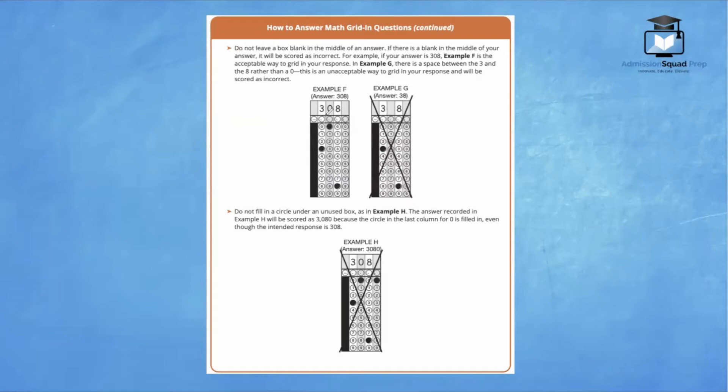Do not leave a box blank in the middle of an answer. If there is a blank in the middle of your answer, it will be scored as incorrect. For example, if your answer is 308, example F is the acceptable way to grid in your response. In example G, where the student left this box blank, it would be considered incorrect. Since there is a space between the 3 and the 8 rather than 0, this is an unacceptable way to grid in your response and will be scored as incorrect.